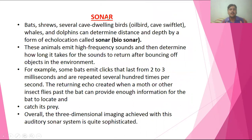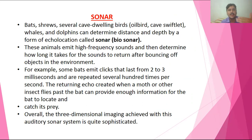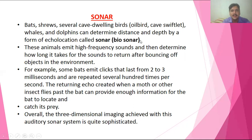The next topic is the sonar system — it is very important from a short question point of view. It is an echolocation system. Bats are blind and do not navigate by sight at night; they produce sound from their mouth directed at objects to determine distance. Several cave-dwelling birds like oil birds and swiftlets, as well as whales and dolphins, also use this sonar system.